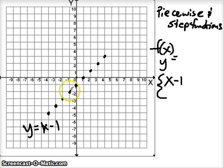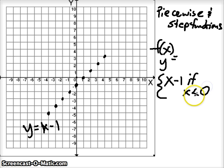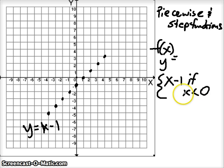Then we're going to talk about the limits, or the constraints, of this line — basically where this line begins and ends. It is this x - 1 line if x is less than 0. So if the values of x anywhere on the x-axis are less than 0, then we're going to have this line — it will exist if x is less than 0.